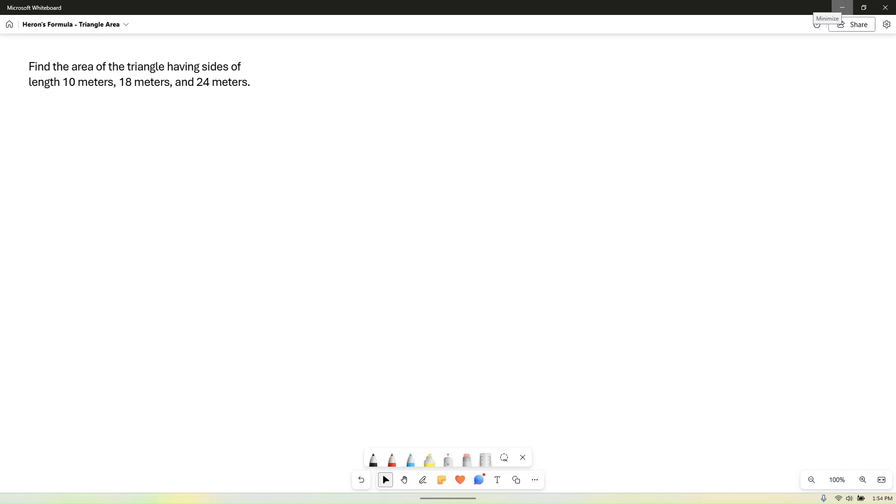Let's look at an example of finding the area of a triangle using Heron's formula. In this example we have a triangle and the lengths of the triangle are 10 meters, 18 meters, and 24 meters.